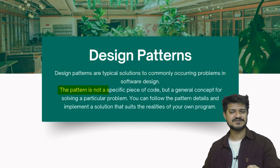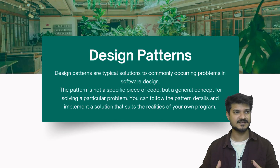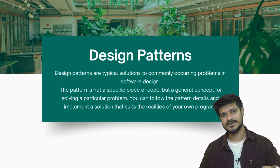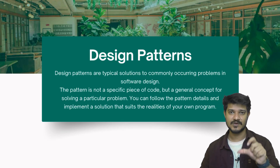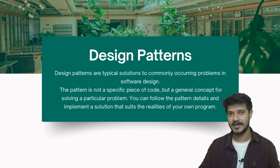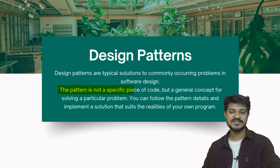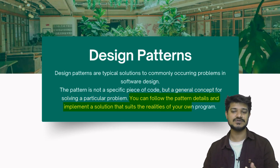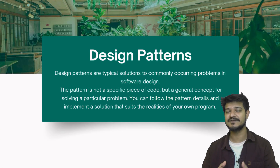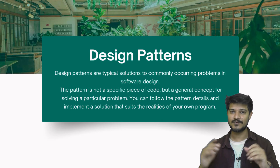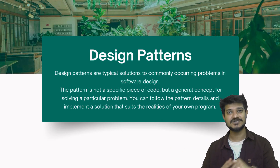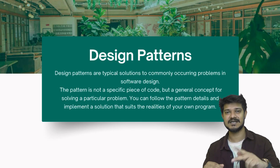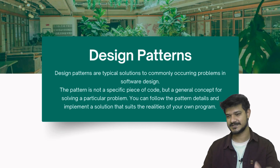The pattern is not a specific piece of code. Unlike an algorithm, which gives you step-by-step instructions, a design pattern gives you a structure for how to solve that problem. The same design pattern when implemented in two different scenarios may differ in code, but the structure remains the same. A design pattern is a general concept for solving a particular problem — you follow the pattern details and implement the solution that suits your own program. The implementation may differ for the same design pattern in two different scenarios, but the defined structure, such as which classes should exist, remains the same.